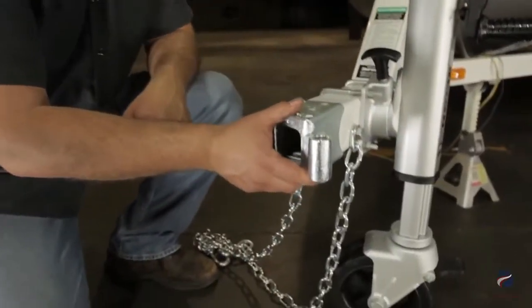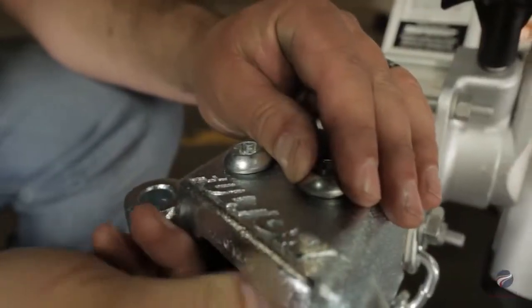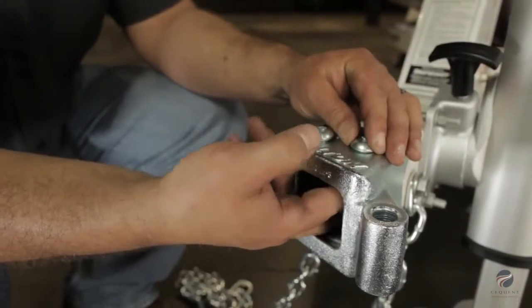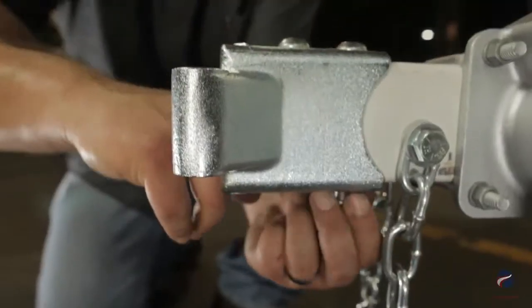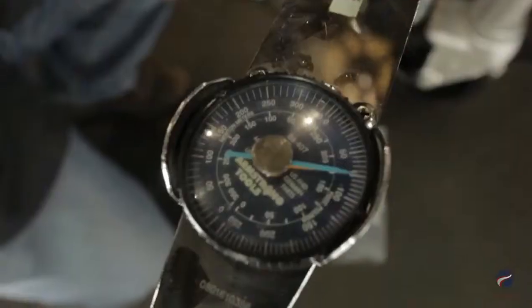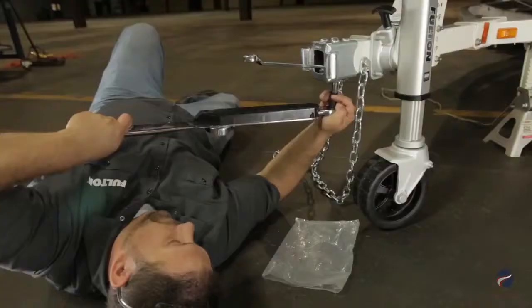Put the castings back onto the tongue and loosely attach the special bolts and nuts. Using the included T-55 Torx bit and a three-quarter inch box end wrench, torque each bolt to 75 foot-pounds.